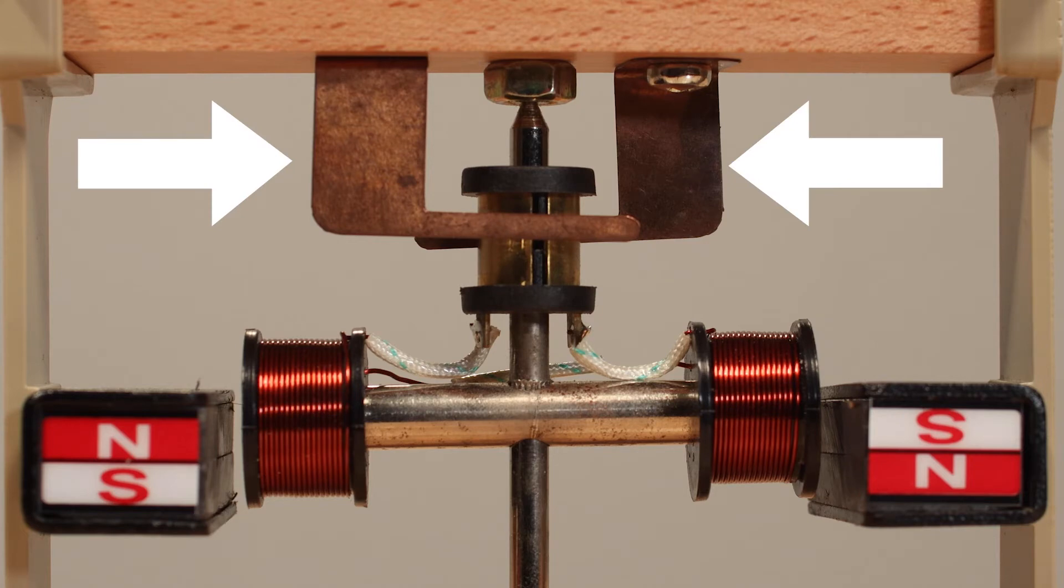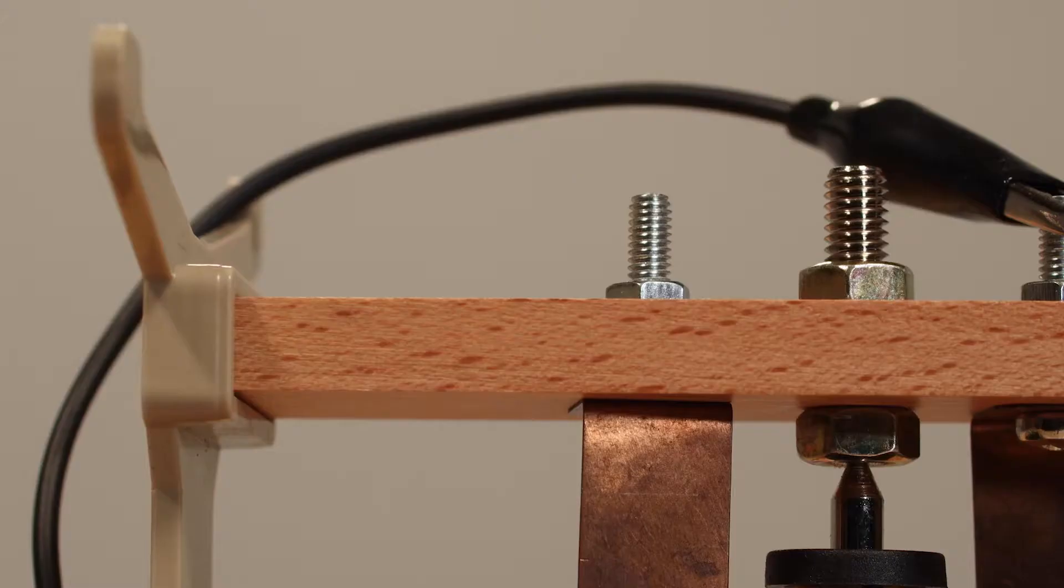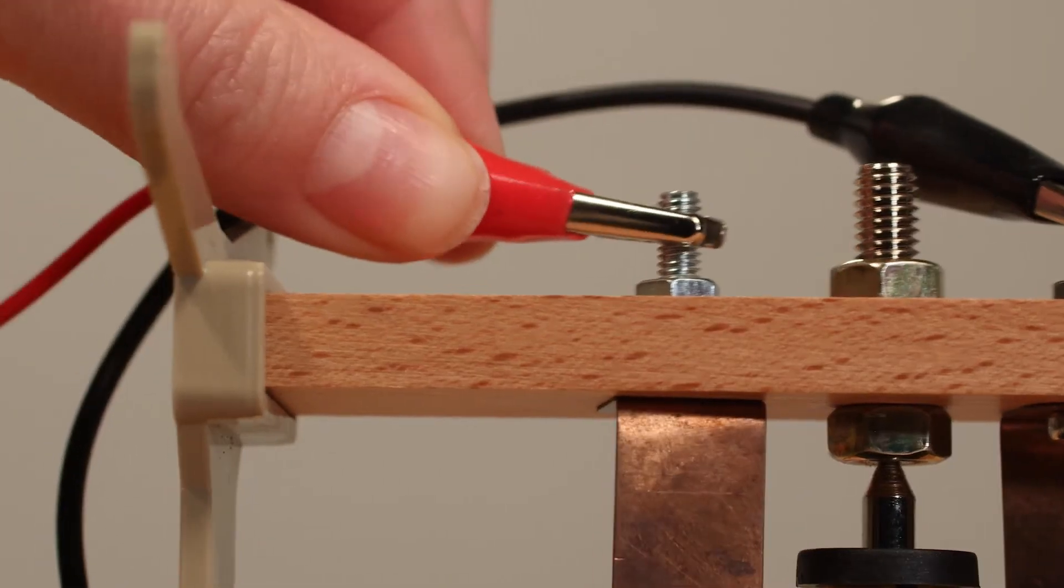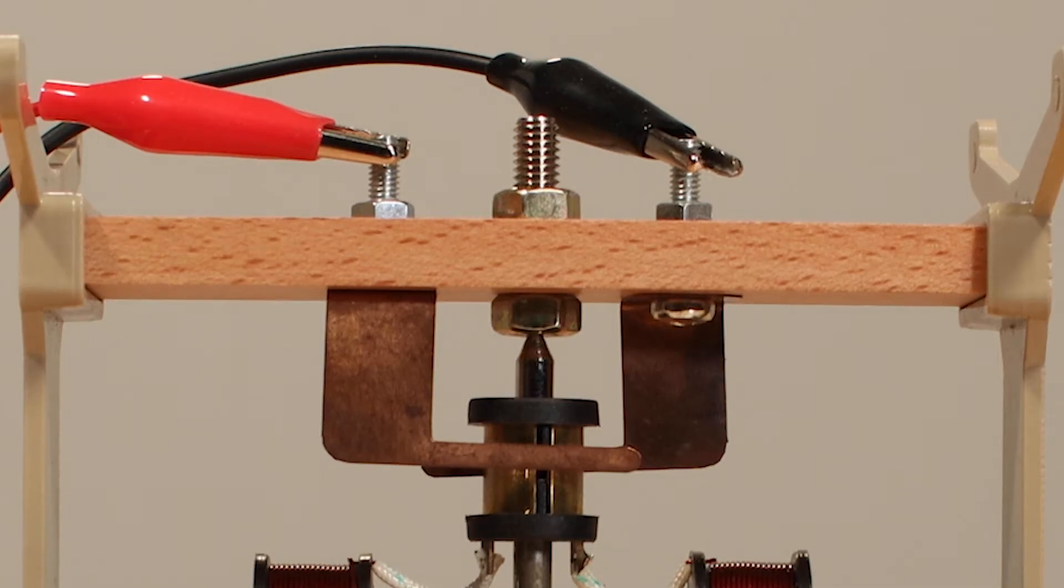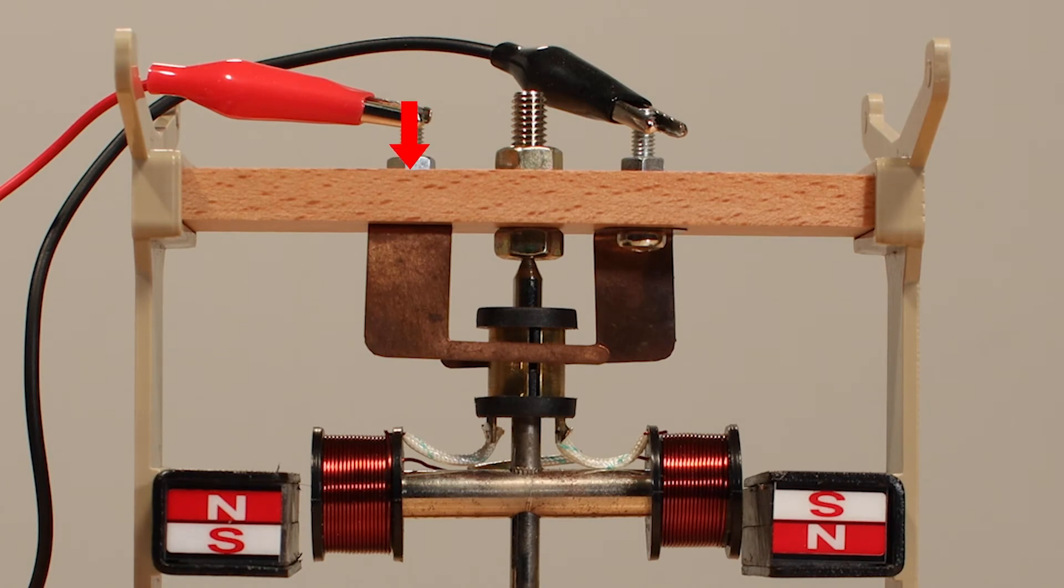This commutator has only two pads. These flat copper pieces are the brushes. The brushes rub against the commutator. Power is connected to the outside of the motor. Those terminals connect to the brushes on the inside of the motor. Power runs through the brushes and into whichever pad it is touching on the commutator. Each pad on the commutator is connected to a wire that connects to one of the coils.